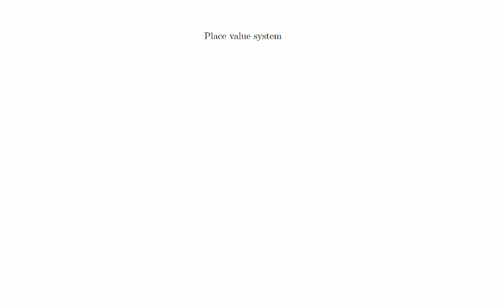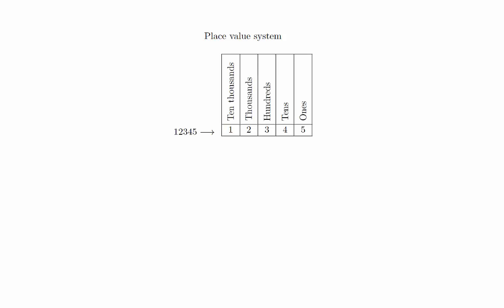We write numbers using a place value system. What this means is that individual digits have meaning based on both the symbol and the location of the digit within the number itself. More specifically, we use a base 10 place value system, which means that the values of the numbers are built around powers of 10.